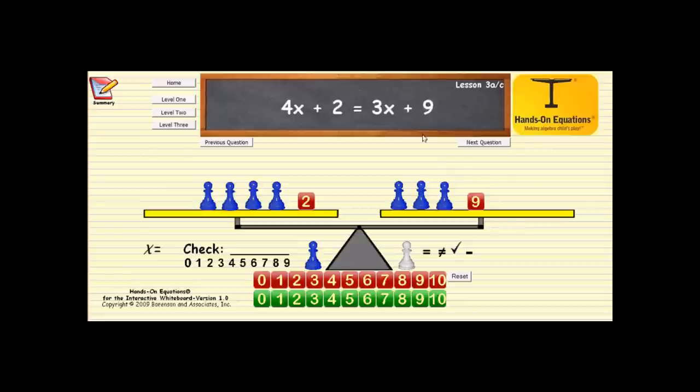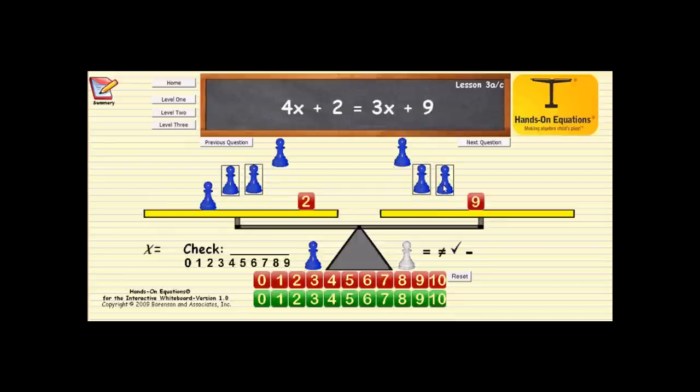At this point we can maintain the balance by removing a blue pawn from each side. That is called the subtraction property of equality. We can actually do that again. I can take away two blue pawns from this side and two blue pawns from this side, so this would be another legal move, another application of the subtraction property of equality.